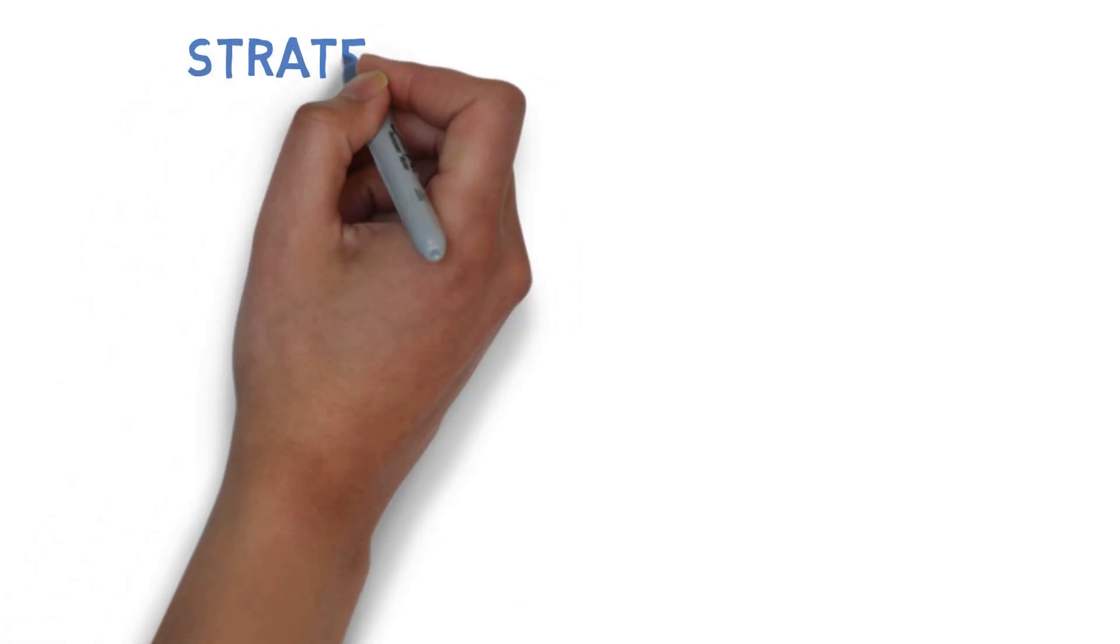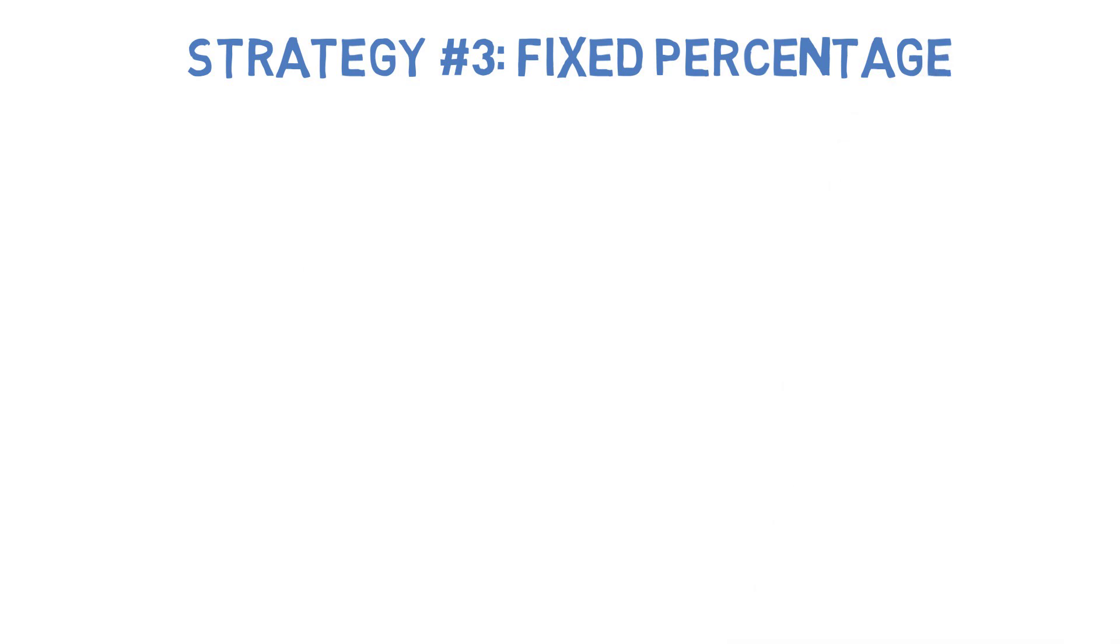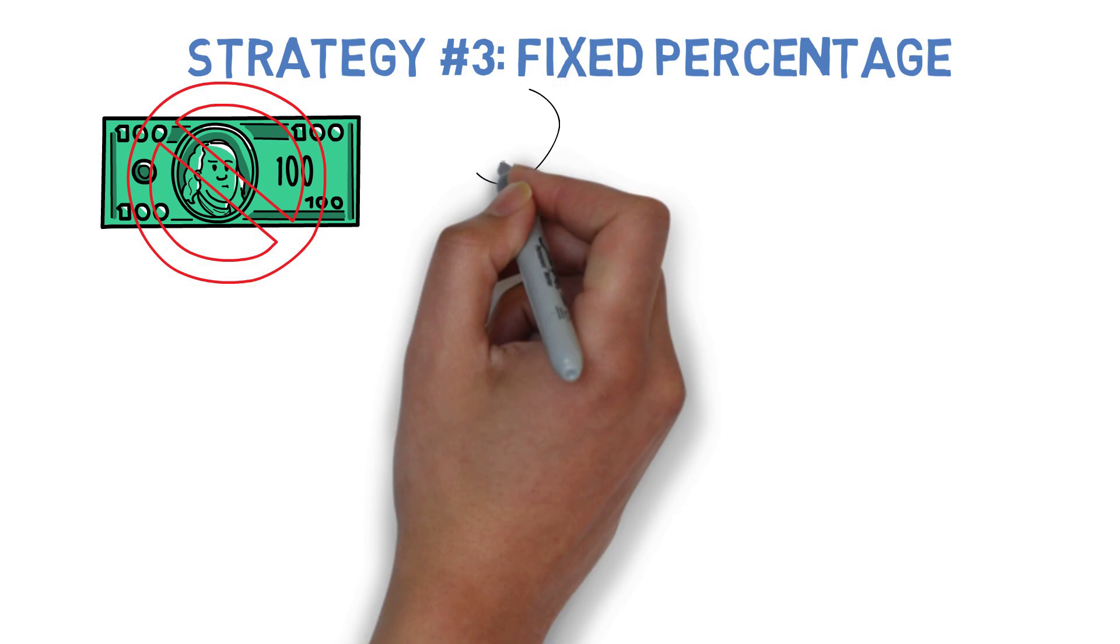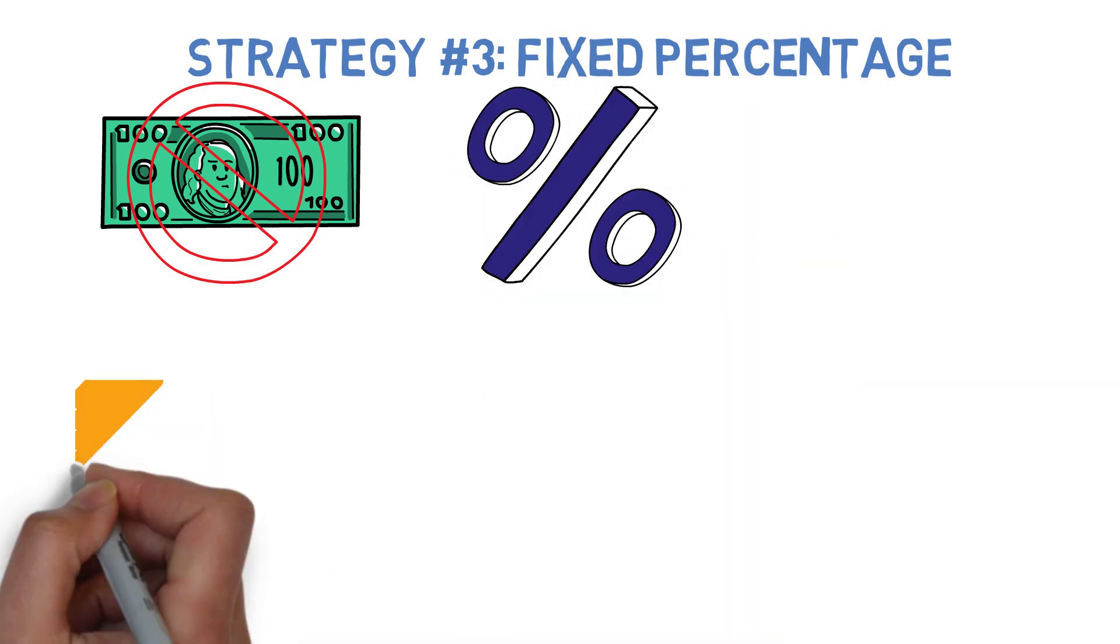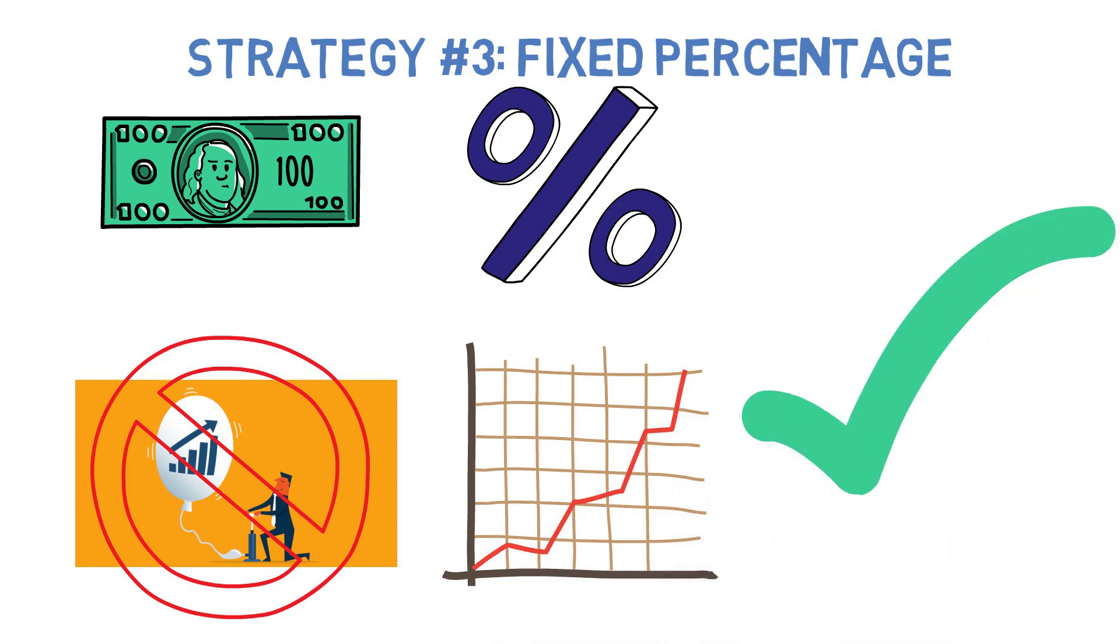A third retirement withdrawal strategy is known as the fixed percentage method. This works very similar to the fixed dollar method except that you're withdrawing a certain percentage of your nest egg every year. It also doesn't adjust for inflation but it does at least adjust with the value of your portfolio so sometimes that makes up for it.